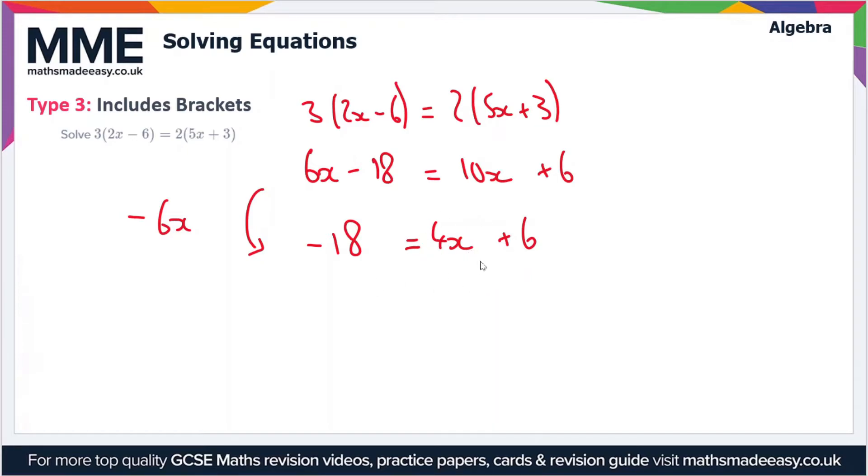So we want to get the x's on their own. So we're going to subtract 6 from the right-hand side and the left-hand side to give us minus 24 is equal to 4x. So we've removed this 6 here from the right-hand side of the equation, so we're left with minus 24 equals 4x.